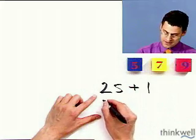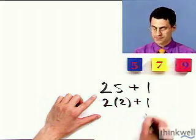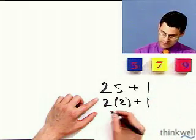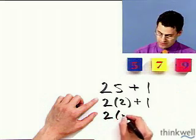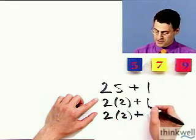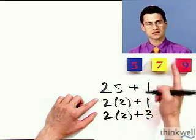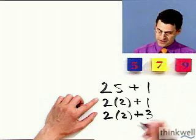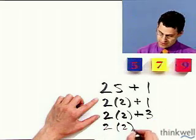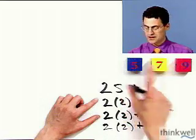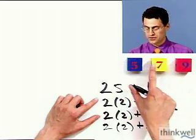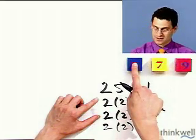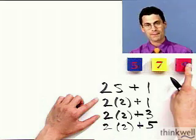For example, notice that 5 is actually 2 times 2 plus 1. And 7 is actually the next number, so I just take 2 times 2 plus 3, because it's the next odd number so I have to add 2 more. And the 9 can be written as 2 times 2 plus 5, because to get from 5 to 9 I have to add 5.